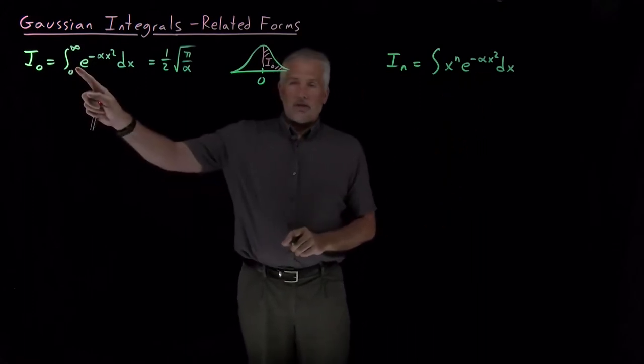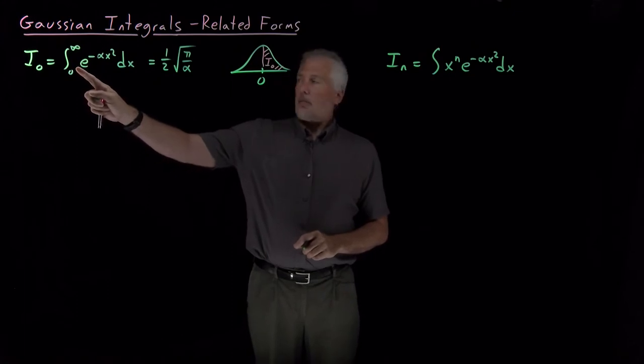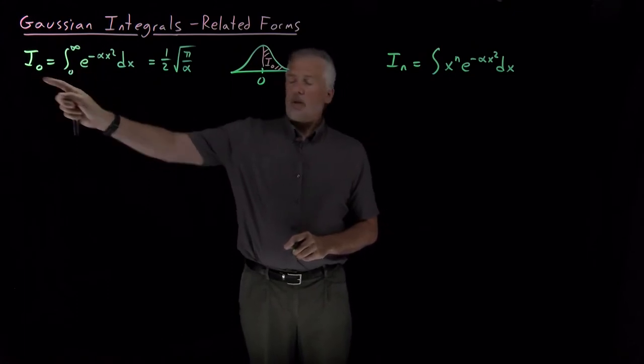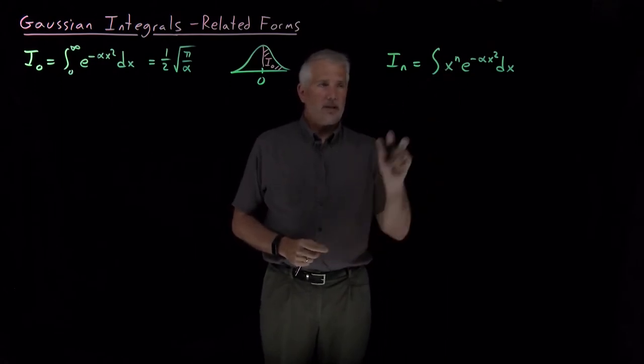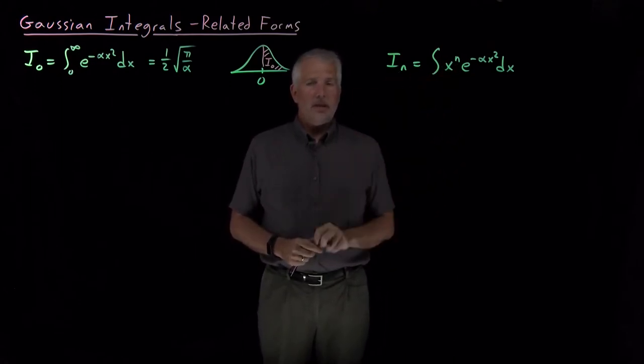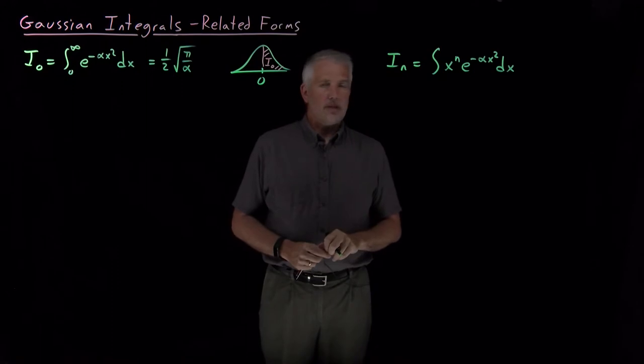So when there's x⁰ or there's no polynomial term in front of the Gaussian, we call that I₀. If we call it I sub n, if there's an xⁿ in front of it, we can ask ourselves what's the value of these additional forms of these Gaussian-style integrals.